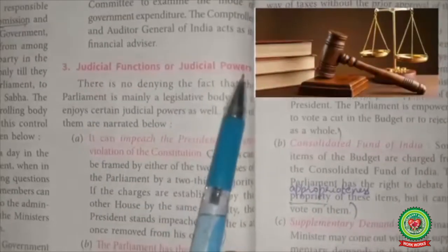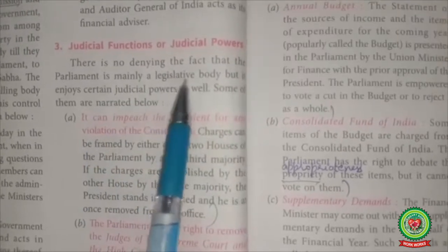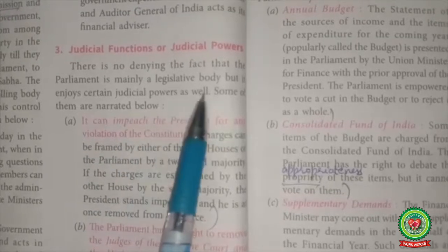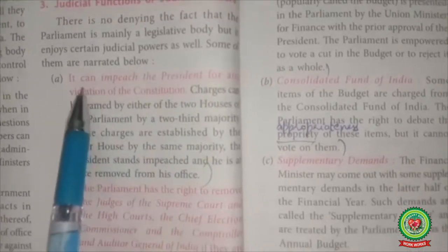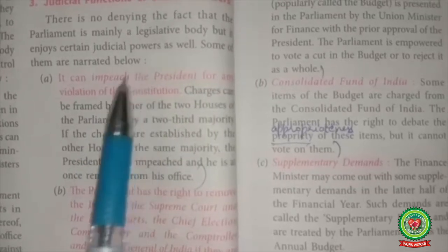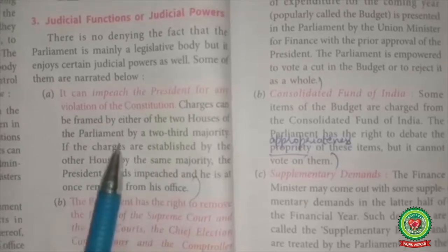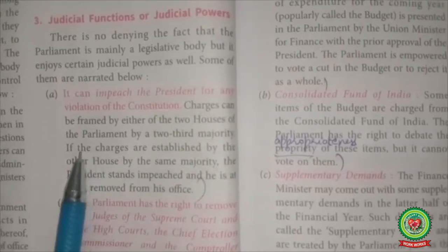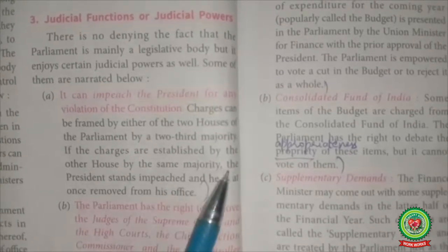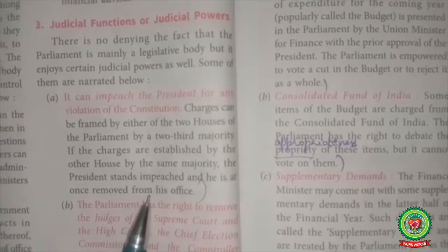3. Judicial Functions or Judicial Powers. Parliament is mainly a legislative body, but it enjoys certain judicial powers as well. It can impeach the President for any violation of the constitution. Charges can be framed by either of the two houses of Parliament by a two-third majority. If the charges are established by the other house by the same majority, the President stands impeached and is at once removed from office.